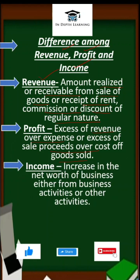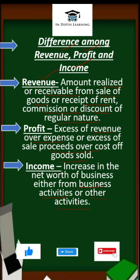Now, income is used in a wider sense. It includes all those amounts received from business activities like selling of goods, or receipt of rent, commission, and discount of regular nature, and amounts received from other activities too, like selling of assets or investment.